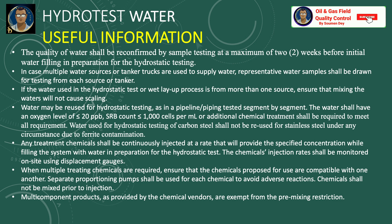If the water used in the hydrostatic test or wet layup process is from more than one source, ensure that mixing of water will not cause scaling. Water may be reused for hydrostatic testing — as in a pipeline or piping test segment by segment — but the water shall have an oxygen level of less than 20 ppb and an SRB (sulfate reducing bacteria) count less than or equal to 1000 cells per milliliter, or additional chemical treatment shall be required. Water used for hydrostatic testing of carbon steel shall not be reused for stainless steel under any circumstance due to ferrite contamination.